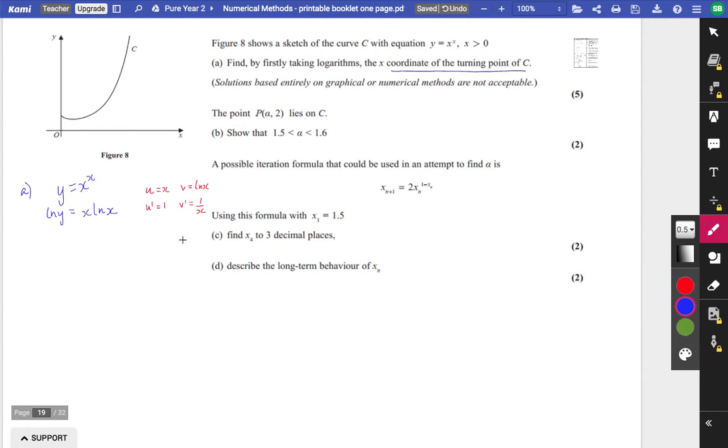I'm going to use that for the product rule. And we know what ln y differentiates to. ln y will differentiate to 1 over y. But because it's implicit, we've got to do dy dx. Now I can do the product rule here. So it's going to be x times 1 over x, which is just 1, and this times this, which is plus ln x. So that means that dy dx is equal to y multiplied by 1 plus ln x.